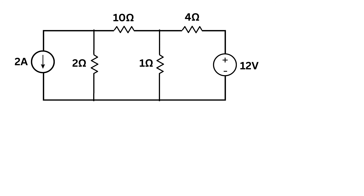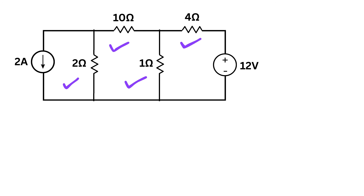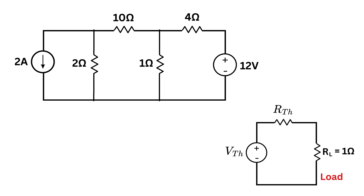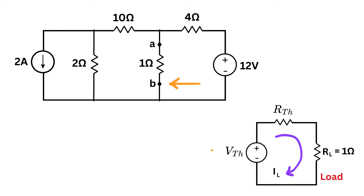Next, let us consider a second example. In this example, we also have a current source of 2 amperes. Then we have four resistors and a voltage source of 12 volts, where this is the positive terminal. We want this 1 ohm resistor to be our load for this problem. So this will be our equivalent Thevenin circuit, and we want to find the value of VTH, then RTH, and current flowing through this 1 ohm load. Label this point as A and this as B. As a first step, we'll find VTH, or the Thevenin voltage. To do so, we remove the 1 ohm load resistor and find the voltage across points A and B, which will be VTH.